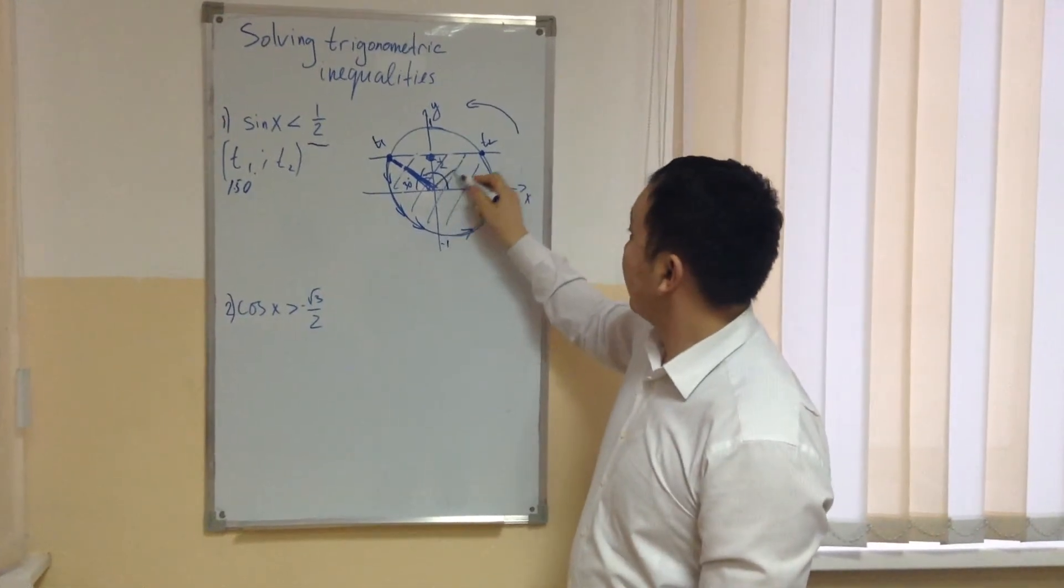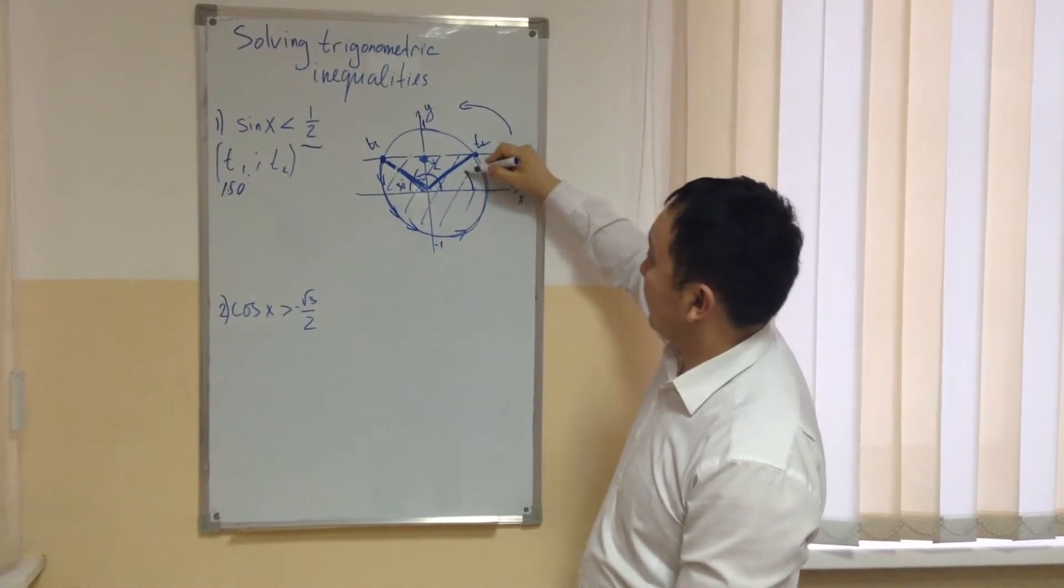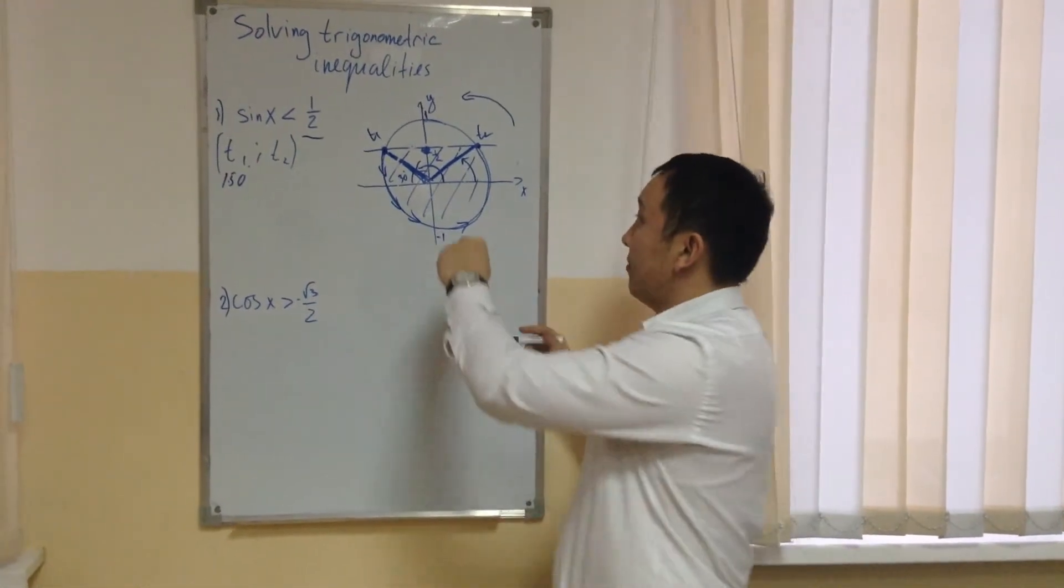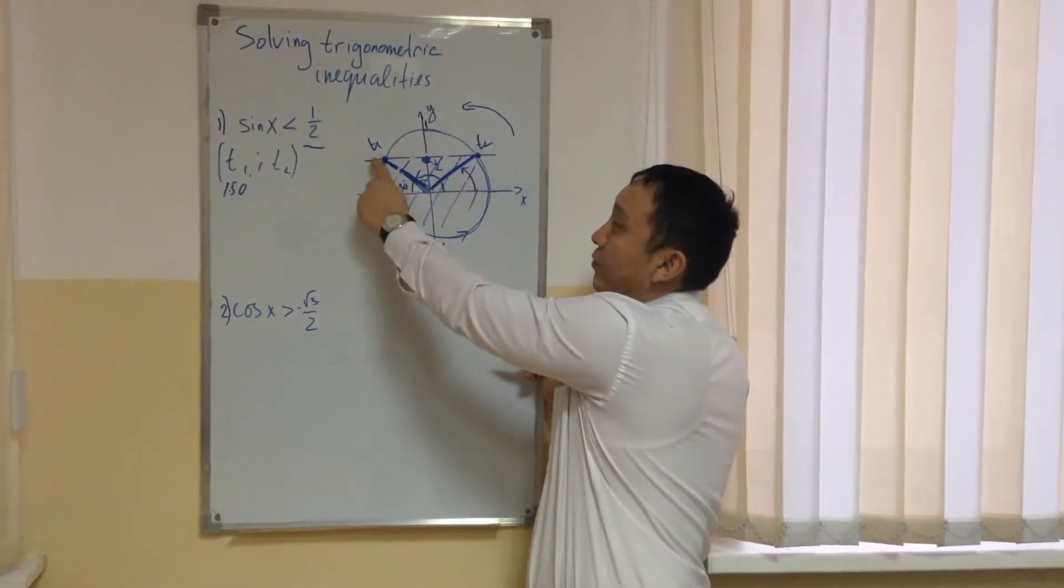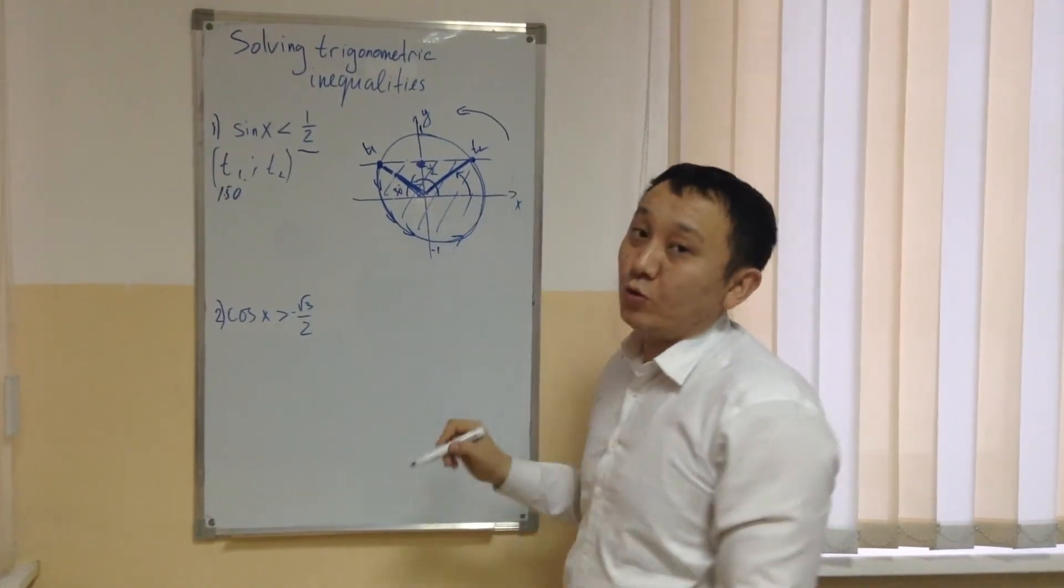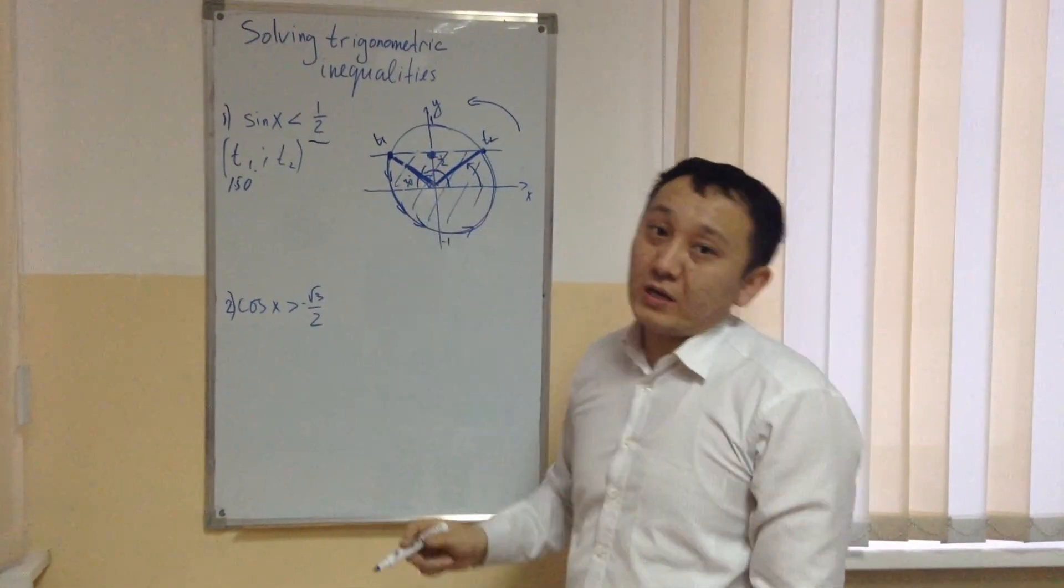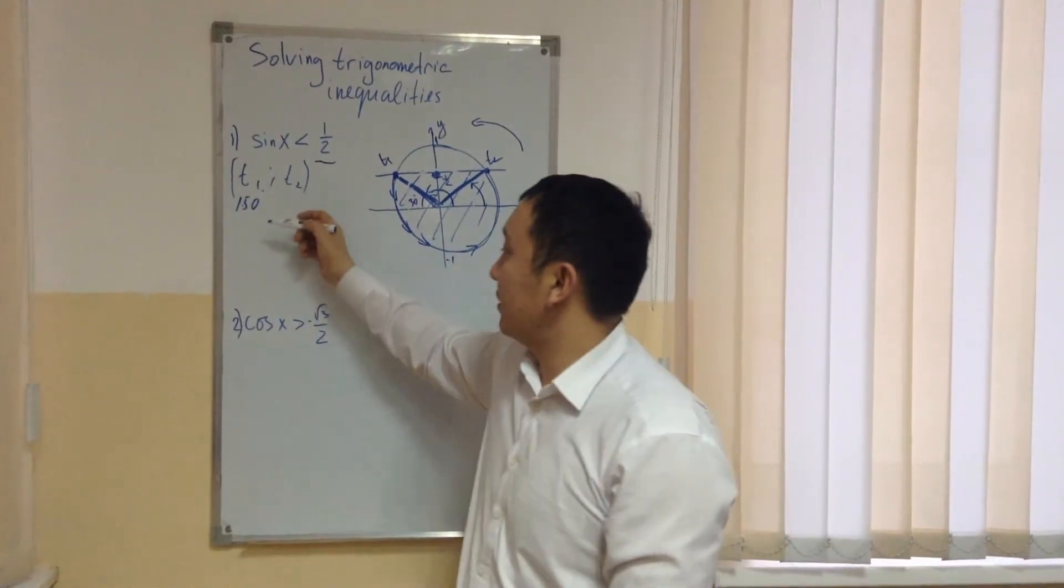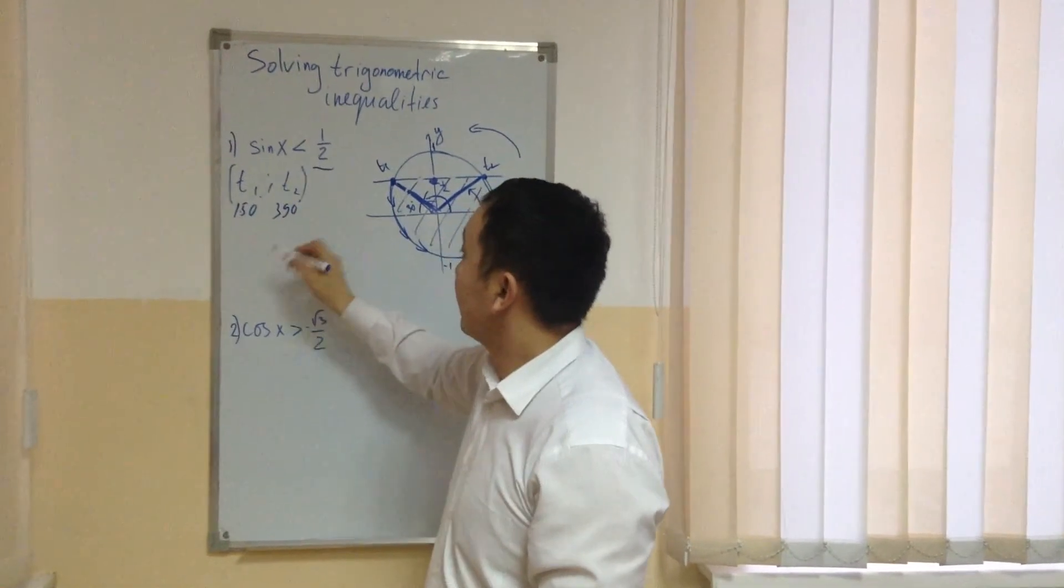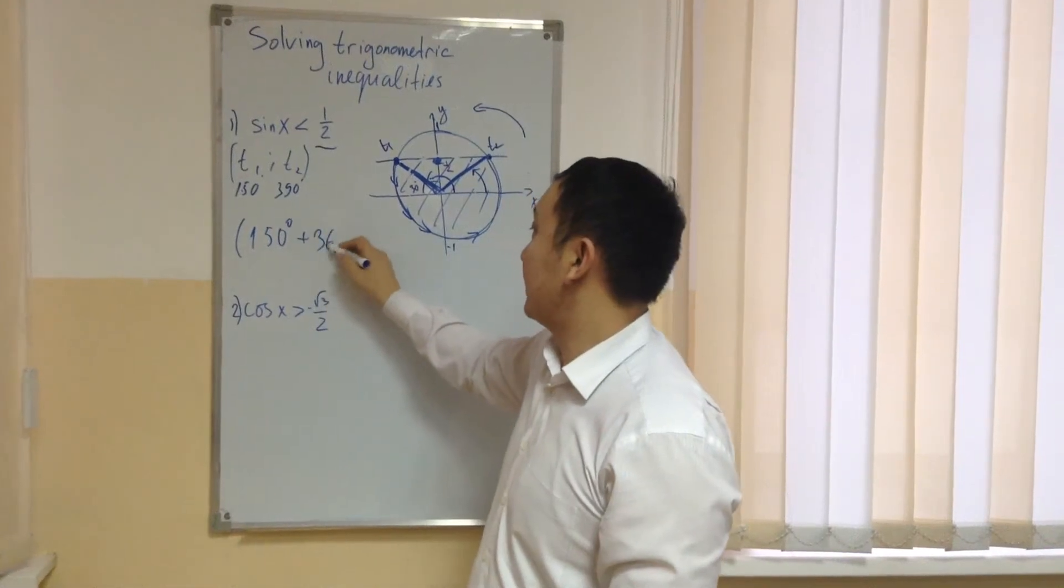Now it is time to find the second point. I can measure like this, it is 30 degrees. But according to the solution, the second point always has to be greater than the first point. Then I need to add to this 30 degrees, 360 degrees. Because the whole circle gives 360. So the next point t2 is 360 plus 30 is 390 degrees. So my answer, total answer, 150 degrees plus 360n to 390 degrees plus 360n.